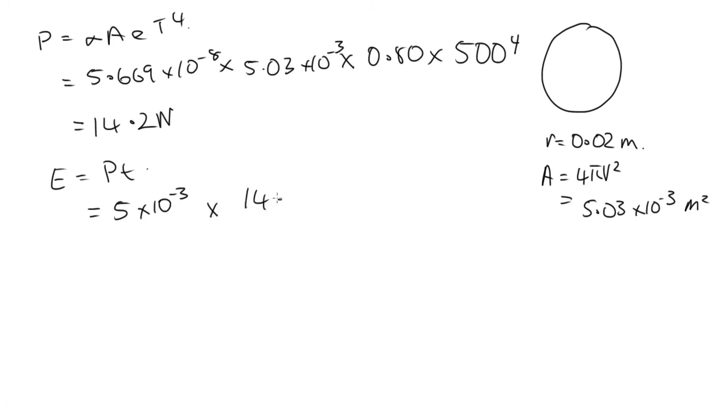So we multiply this by the 14.2, the rate of energy emitted, and then multiply it by the time, which is 2 minutes, so 2 times 60. That gives us 8.5 joules intercepted.